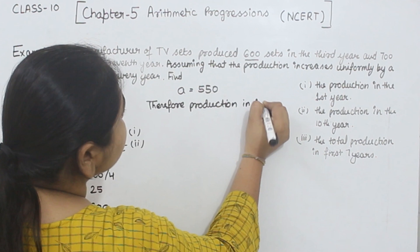Now comes part 2: the production in the 10th year. We have to find a10. We know a10 = a + 9d, so a10 = 550 + 9 × 25 = 550 + 225 = 775 TV sets. So in the 10th year, the production is 775 TV sets.